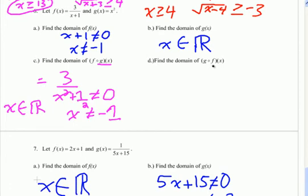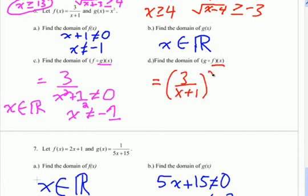Now let's try g of f of x. The domain of f of x: it's a rational function, so the denominator can't equal zero. Setting it not equal to zero and solving, x can't equal negative 1. Now compose by plugging f of x into g of x and we get 3 over (x plus 1) squared. It's still a rational function, and the denominator still can't equal zero, so we again get x can't equal negative 1. The original restriction is the only restriction.